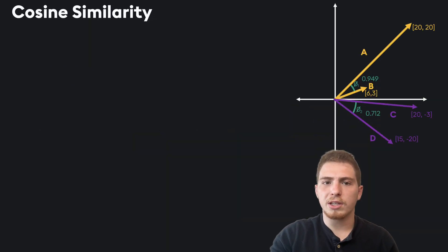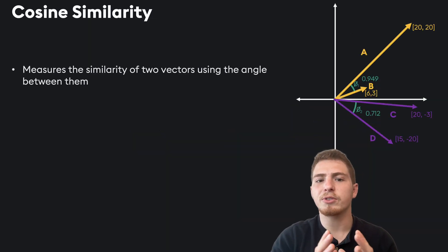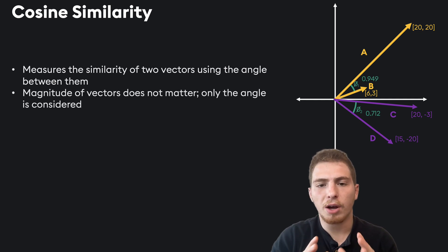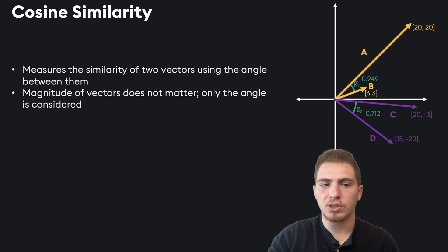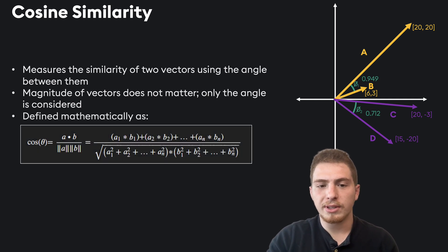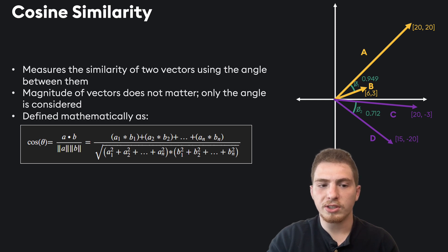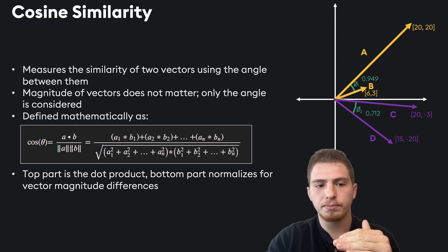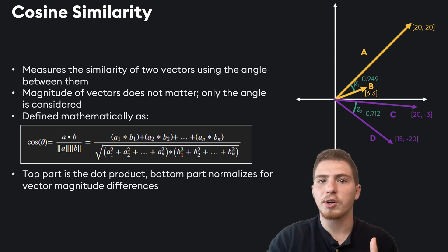Cosine similarity is a metric that measures the similarity of two vectors using the angle between them. The magnitude of the vectors does not matter at all — only the angle itself is considered, and in this way it's different from dot product. Its mathematical formula is defined as the dot product divided by the product of the magnitudes of the vectors. The top part is the dot product, and the bottom part normalizes for the vector magnitude differences.